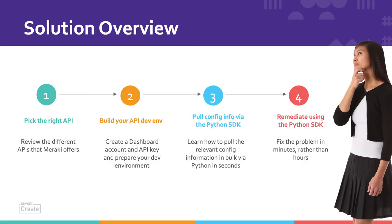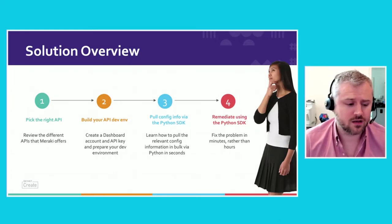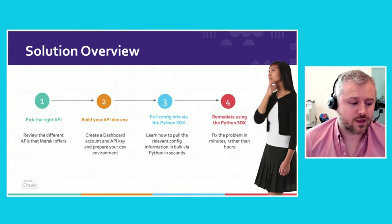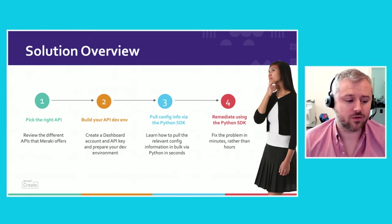So let's look at how we're going to tackle this problem. First, given a few API options, we'll pick the right API for the job. Then we'll kick the tires on a Meraki dashboard account and API key so you can prepare your developer environment. Then we'll dive into building an app using the Python SDK with real working Python code. And finally, we'll remediate the problem using the Python SDK.